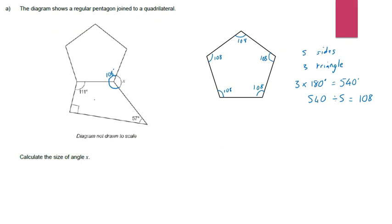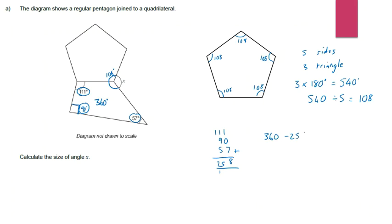I only need the one angle linked to X, so that one is 108 degrees. Now I focus on the quadrilateral — angles in any quadrilateral must sum to 360 degrees. I can see a right angle there, so that's 90 degrees. I've got 111 degrees, 90 degrees, and 57 degrees from three of the four angles. Adding those three together gives 258 degrees. Subtracting from 360 tells me the missing angle is 102 degrees.